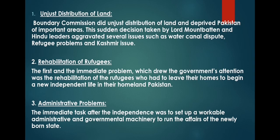The first problem is unjust distribution of land. The distribution of land was done unjustly by the Boundary Commission, which was assigned by Mountbatten. Its head was Sir Radcliffe. As per the instructions given by the Viceroy, he distributed the land to Pakistan unjustly. He deprived Muslims from areas that had a Muslim majority. This created several issues including the water canal dispute and the Kashmir issue.